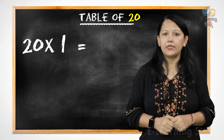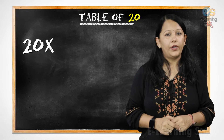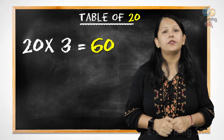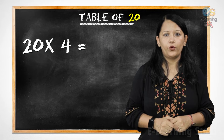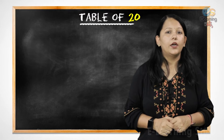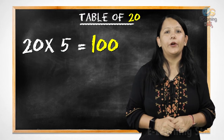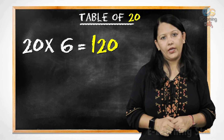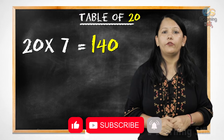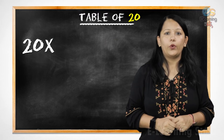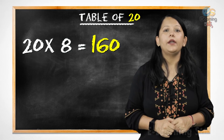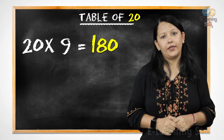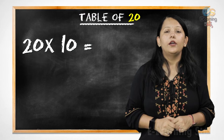Let's start. 2 1's are 20, 2 2's are 40, 2 3's are 60, 2 4's are 80, 2 5's are 100, 2 6's are 120, 2 7's are 140, 2 8's are 160, 2 9's are 180, 20 10's are 200.